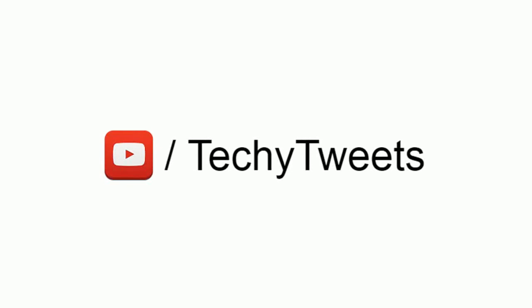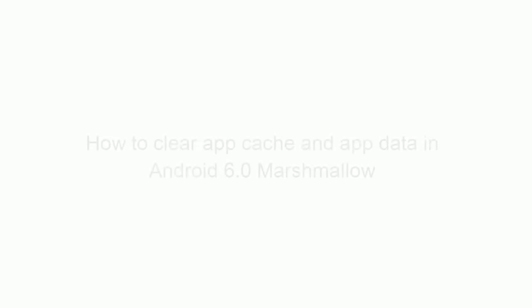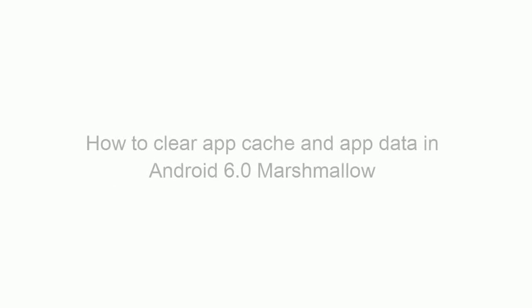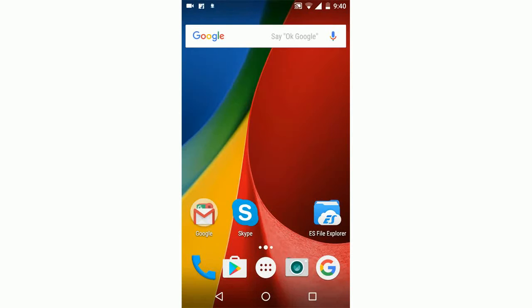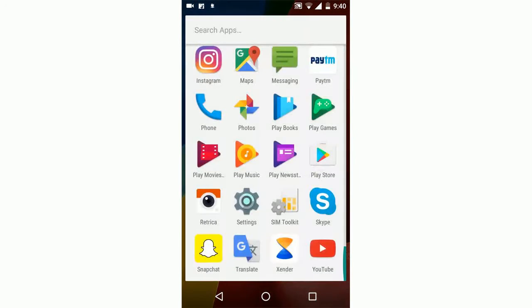Hey guys, welcome to Techy Twits. In this tutorial, we are going to see how to clear app data and app cache data in Android Marshmallow 6.0. In order to clear app data and cache data, first navigate to Settings.